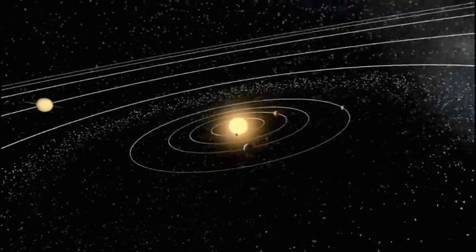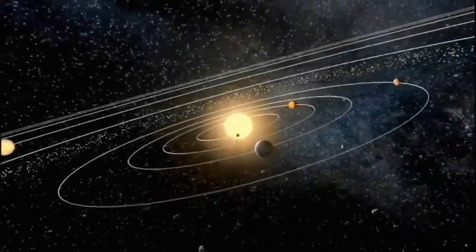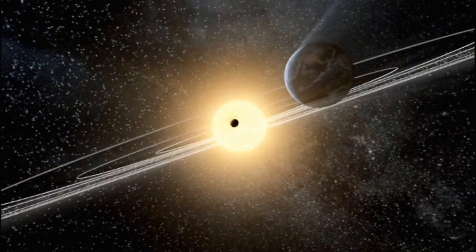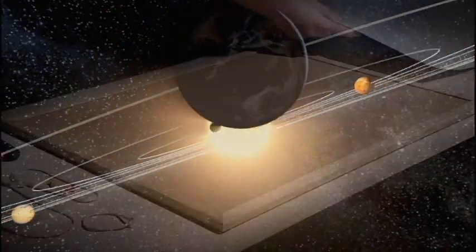The orbits of the planets, asteroids, and comets around the Sun are not quite circular, but are in fact ellipses with the Sun at one of the foci of the ellipse.